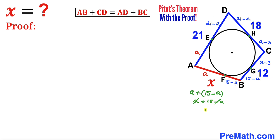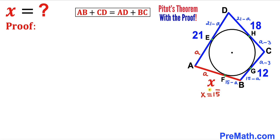Adding those two segments gives us 15, so X equals 15 units. This confirms our answer using the two tangent theorem, completing the proof. Thanks for watching — please don't forget to subscribe to the channel for more exciting videos. Bye!